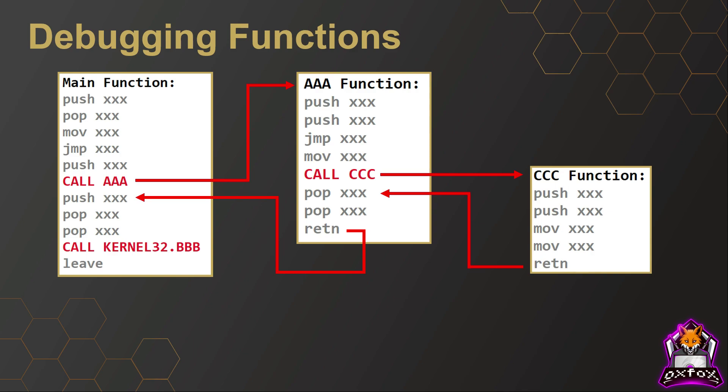Windows API calls can be identified by their naming convention, which begins with the DLL they are loaded from. In this example I'll use the name triple-B as an example. However, as it is a Windows API, I wouldn't want to step into this instruction since it hasn't been written by the malware author — it's not the malicious code we're interested in. I'll be interested in what has been pushed onto the stack prior to the function call being made, and also what is returned by the function after it has been executed.